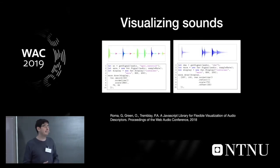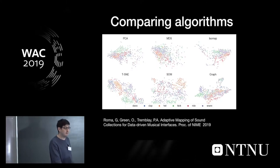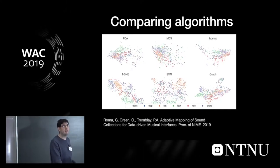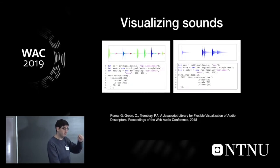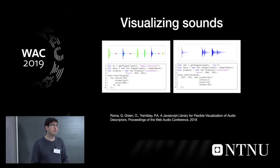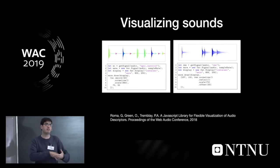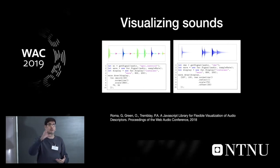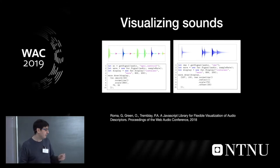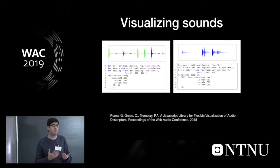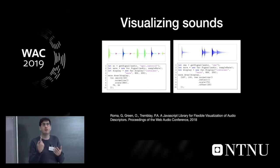So, change of subject. All these things allow you to create scatter plots, but you may want to represent sounds as something else than a point, right? So this is another project we presented last year at the conference, it was a library for visualizing the sounds themselves, using the descriptors to represent and to play with different colors and shapes. This is a very flexible library that allows you to combine descriptors to create some visual representation of one sound.